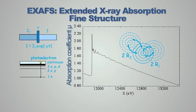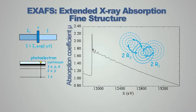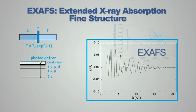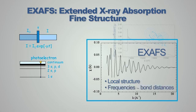The origin of these oscillations is of quantum mechanical nature. One has to consider the photoelectron as a spherical wave which propagates away from the absorbing atom and eventually interacts with the electronic potentials of the neighbor atoms. Part of this wave is backscattered towards the origin, and therefore you have an interference phenomenon between the outgoing wave and the backscattered wavelets. This interference gives rise to a modulation of the absorption probability. One can isolate this signal — the EXAFS signal — which contains the information on the local structure, and in particular the frequencies in this signal are directly proportional to the bond distances between the absorber atom and its neighbors.